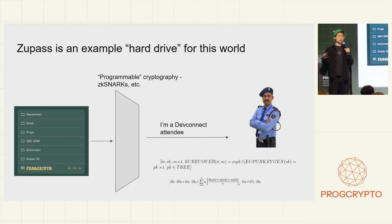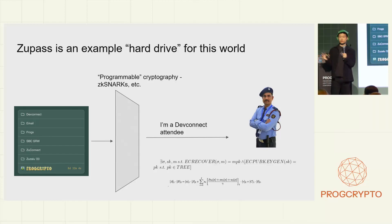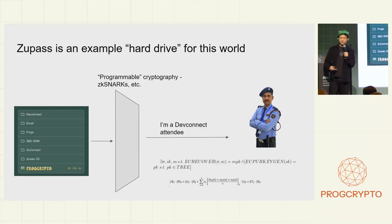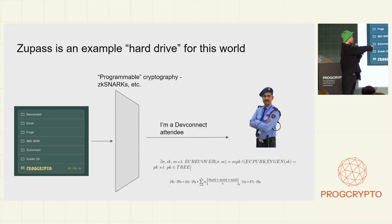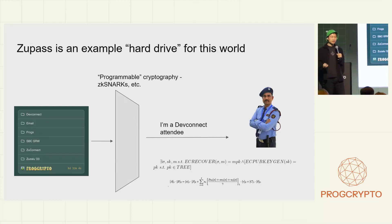One simple interaction you've probably had is registering to get your wristband. Some party formulates a query like 'are you a DevConnect attendee?' and you run programmable cryptography on the stuff inside this simplified file system. Under the hood, various math operations translate the claim into a series of mathematical operations run inside cryptography. At the end, you get the claim 'I'm a DevConnect attendee' attached to a cryptographic artifact, and that satisfies the person on the right.